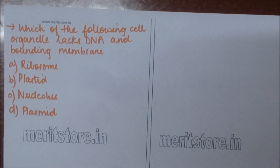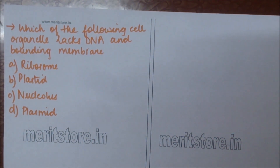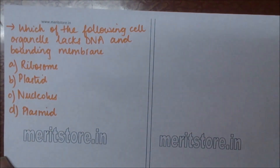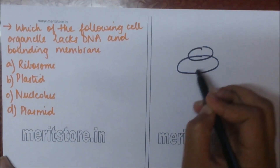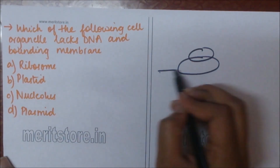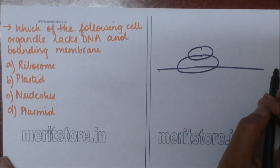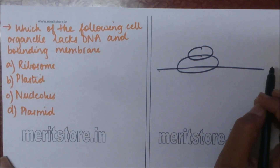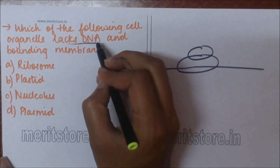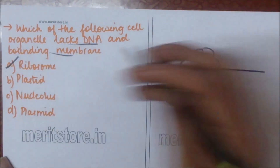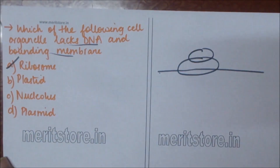So option D is the correct answer. The following cell organelles lack DNA and bounding membrane: A) ribosome, B) plastids, C) nucleolus, D) plasmids. Ribosomes are made up of two subunits and mRNA, help in protein synthesis, and do not contain DNA and bounding membranes. So option A is the correct answer.